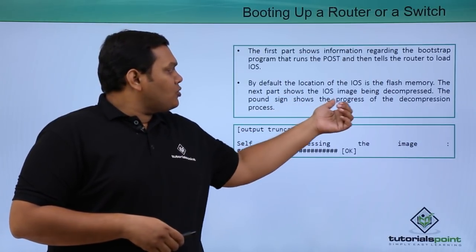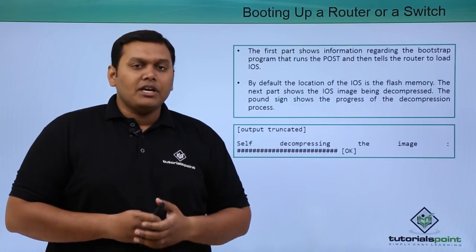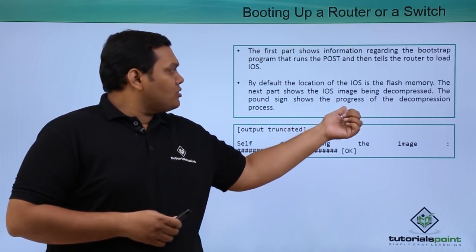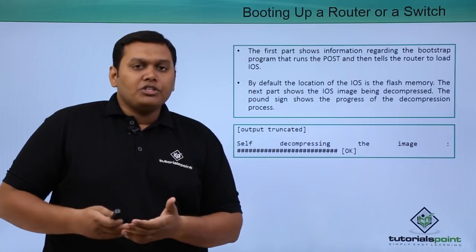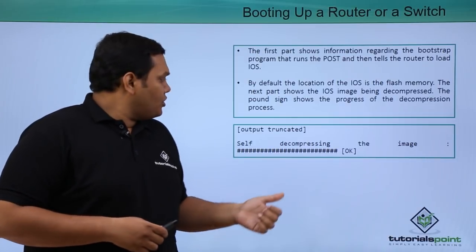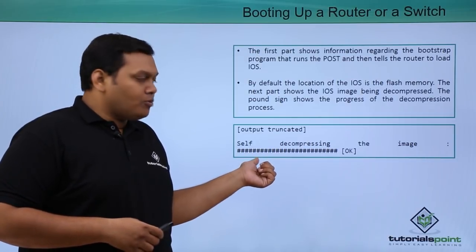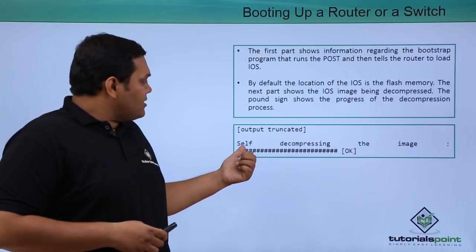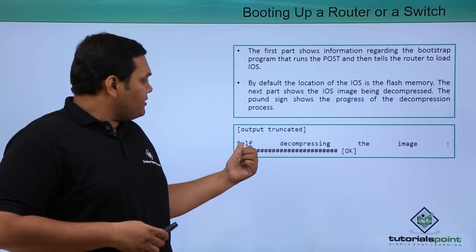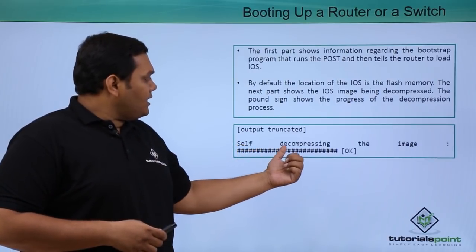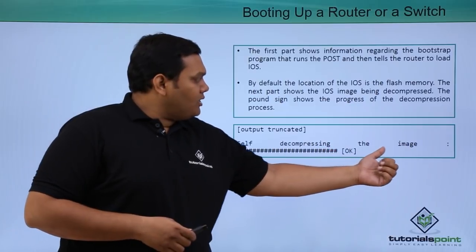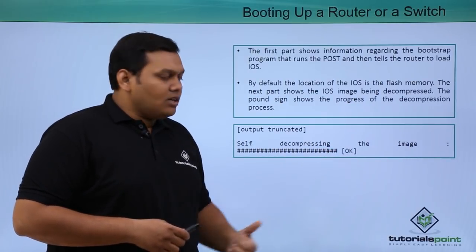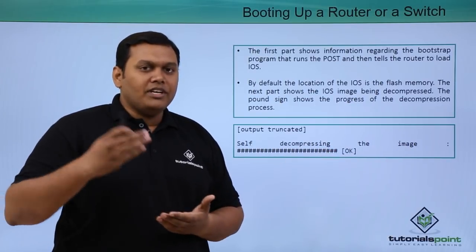The next part shows the IOS image being compressed, and after compression, the pound sign shows the progression of decompression. This is the truncated output — the POST self-test runs and decompression of the image takes place. The pound signs show the process of decompression.